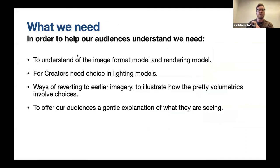What we need in order to help our audiences understand what we are showing them - we need to understand the image format model and rendering model. We need ways of reverting to earlier imagery to illustrate how the pretty volumetrics involve choices. Show the audience the scientific image the telescope took, then turn to the three dimensional. I don't think we should ever say this is what is really there. We need to offer our audiences a general explanation of what they are seeing.